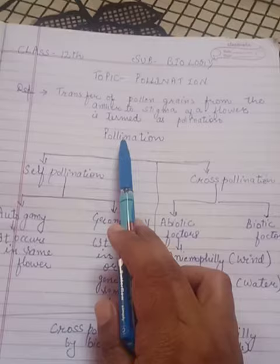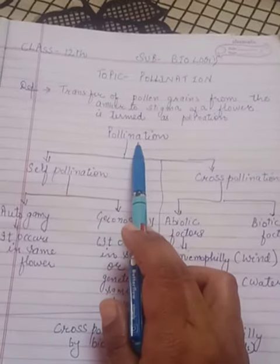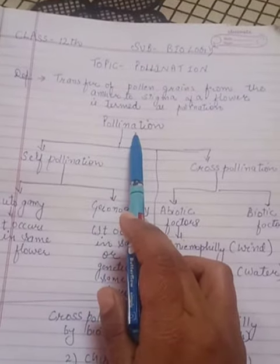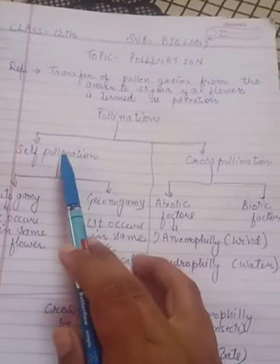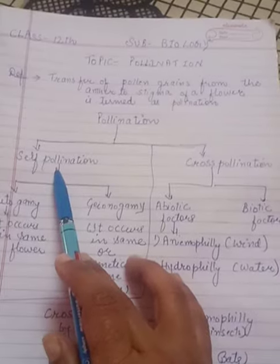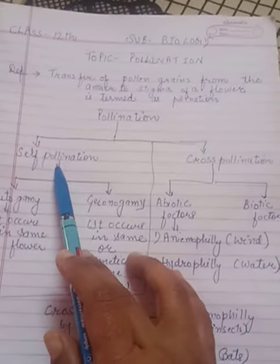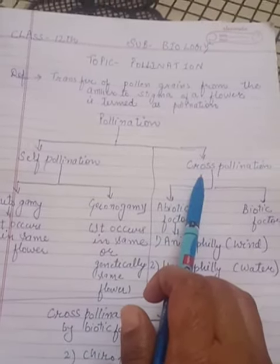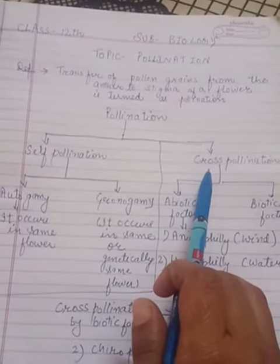Now what are the types of pollination? Pollination is of two types: one is self-pollination and another is cross-pollination.